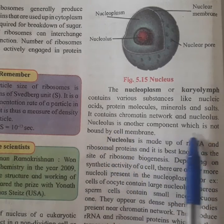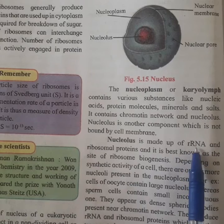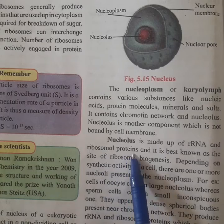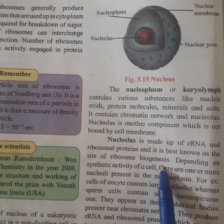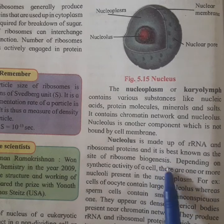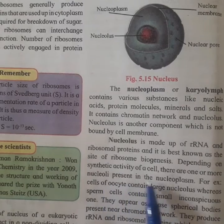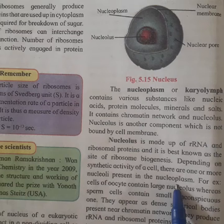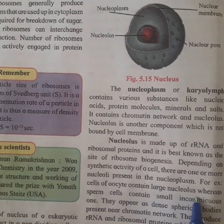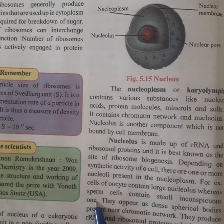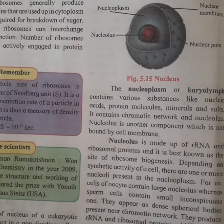The nucleolus is another component of the nucleus which is not bound by a membrane. The nucleolus is made up of rRNA and ribosomal proteins, and it is best known as the site of ribosome biogenesis. Depending on the synthetic activity of a cell, there are one or more nucleoli present in the nucleoplasm. For example, cells of the oocyte contain a large nucleolus whereas sperm cells contain small ones. They appear as dense spherical bodies present near chromatin networks, and they produce rRNA.